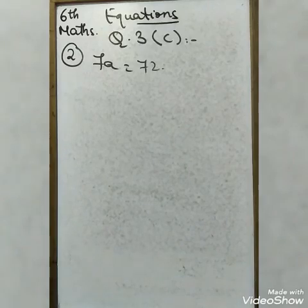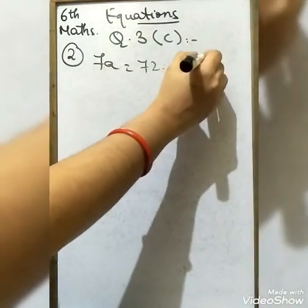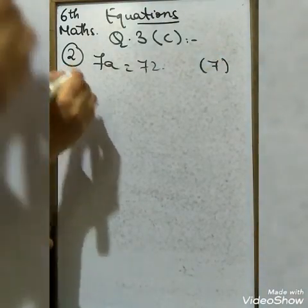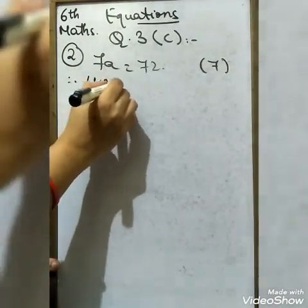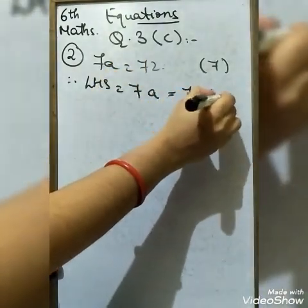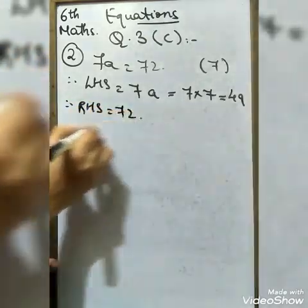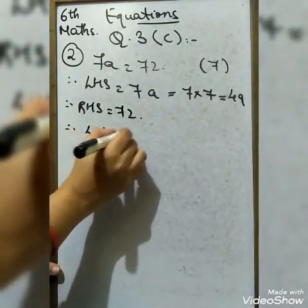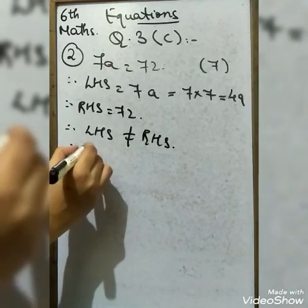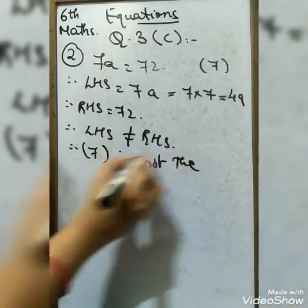Second question: 7A = 72, with the bracket value A = 7. LHS = 7 × 7 = 49. RHS = 72. LHS ≠ RHS, so 7 is not the solution.